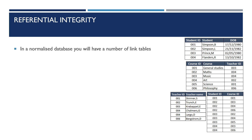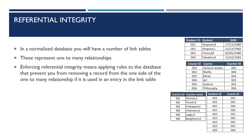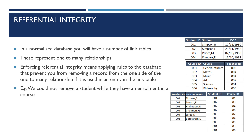In a normalised database, you will have a number of link tables. These represent one-to-many relationships. Enforcing referential integrity means applying rules to the database that prevent you from removing a record from the one side of a one-to-many relationship if it is used in an entry in the link table. For example, we would not be able to remove a student while they have an enrolment in a course.